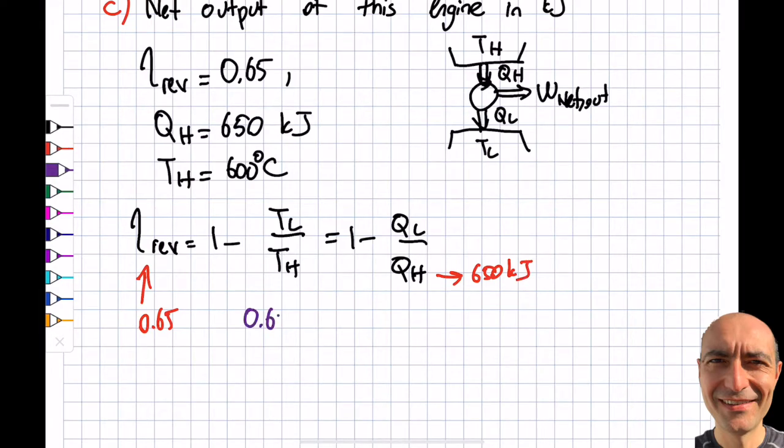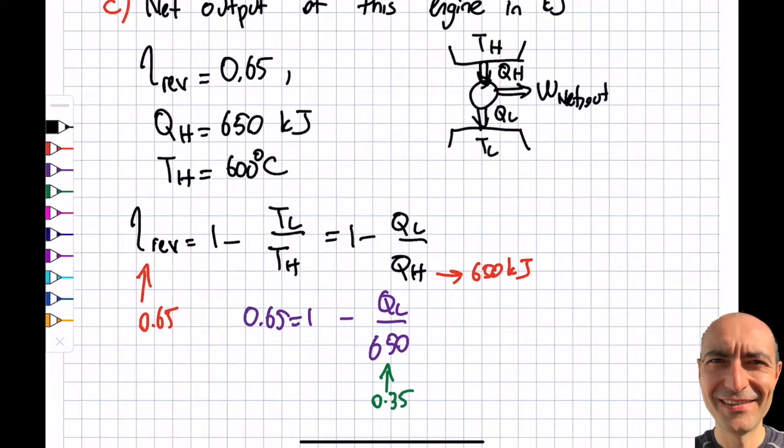Writing it out: 0.65 = 1 - QL/650. This means QL/650 = 0.35. My QL turns out to be 650 × 0.35, which equals 227.5 kilojoules. That's the first answer to the question.